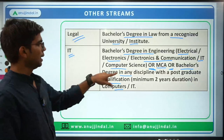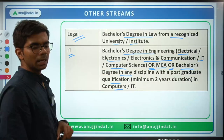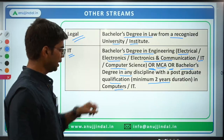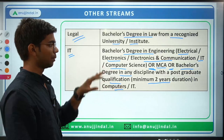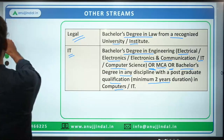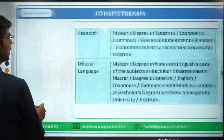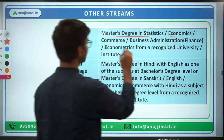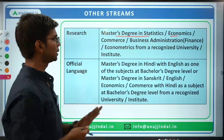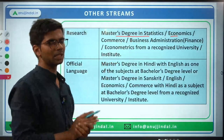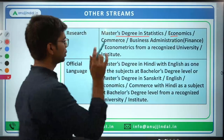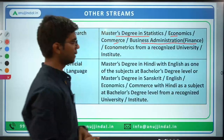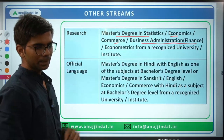Another option for the IT stream: a Bachelor's degree in any discipline with a Post Graduate qualification in computers or IT, with a minimum duration of 2 years. For the Research stream, your Master's degree should be in Statistics, Economics, Commerce, or Business Administration with specialization in Finance — essentially MBA Finance and Econometrics from a recognized university or institute.